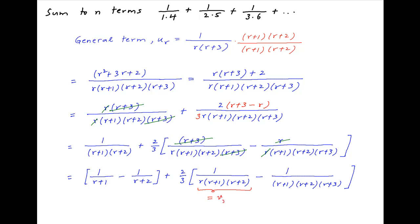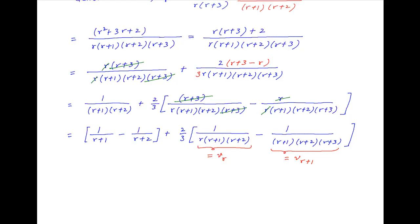Let's denote 1 upon r(r + 1)(r + 2) by v_r. Therefore, the last term inside the brackets is equal to v_{r+1}, because it is the same as v_r with r replaced by r + 1. Therefore, u_r is equal to 1/(r + 1) minus 1/(r + 2) plus 2/3 times, in brackets, v_r minus v_{r+1}.